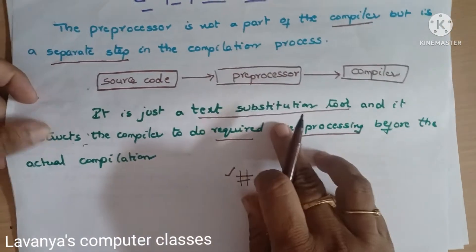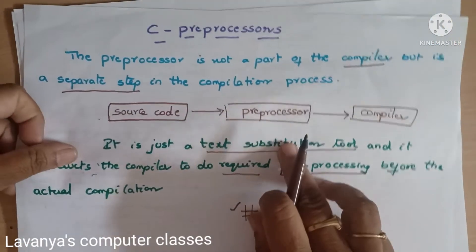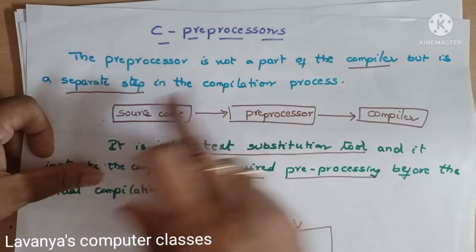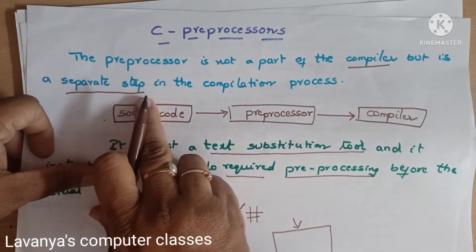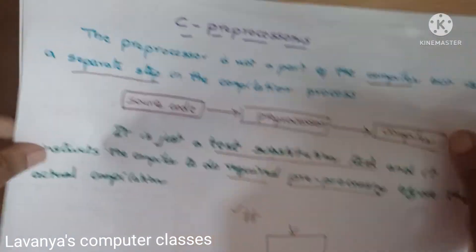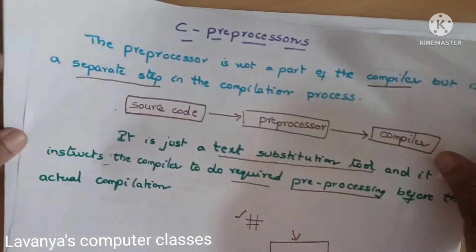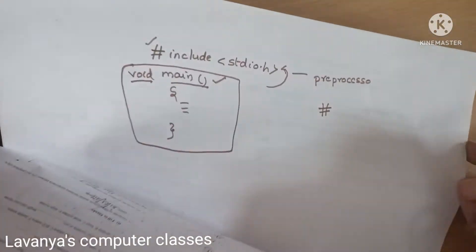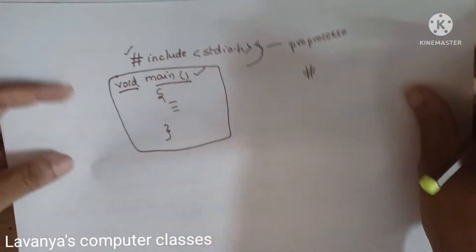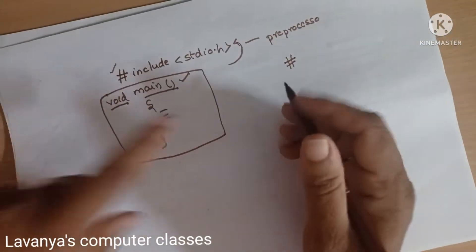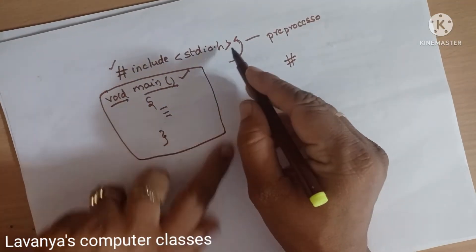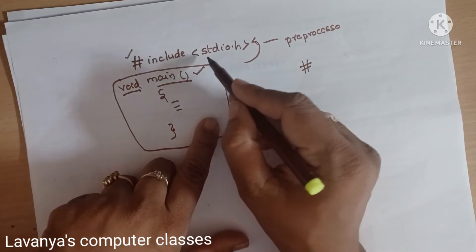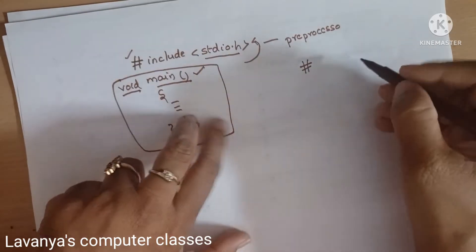The Pre-Processor is not a part of the compiler, but it is a separate step in the compilation process. For example, any C language program starts with hash-include stdio.h followed by void main.